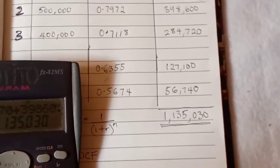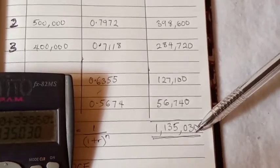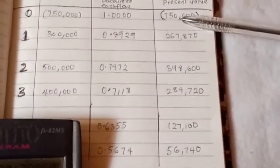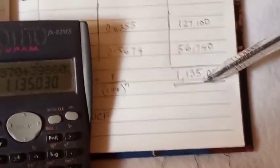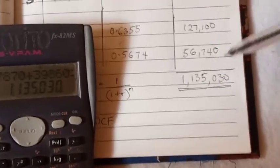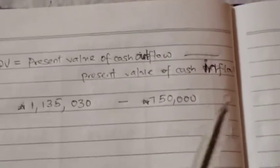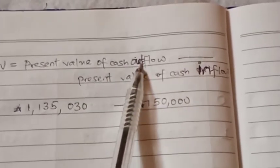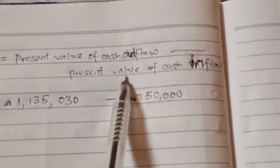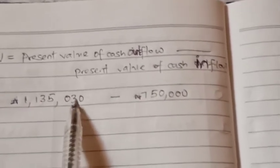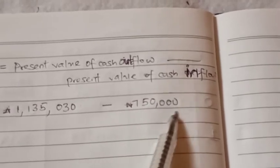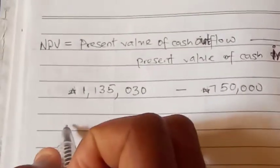And like I said earlier, I told you when you want to find your NPV, you have to subtract this initial capital from the total of the present value, so you'll know if your NPV is negative or positive. So we are going to calculate our NPV. The formula is present value of cash inflow minus the present value of cash outflow.